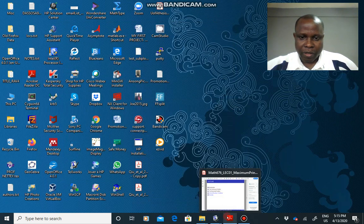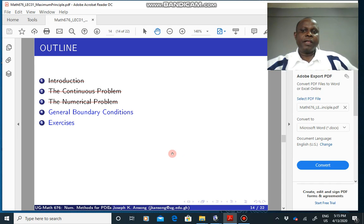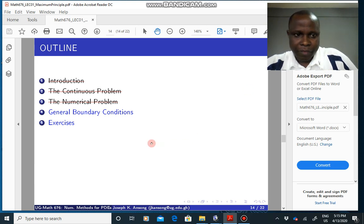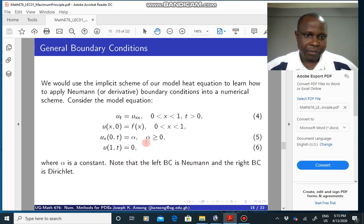All right, so let's continue with where we left off. Now for this lecture we want to look at general boundary conditions. So suppose you have your model problem which is given by this, the heat equation, you have your initial condition.